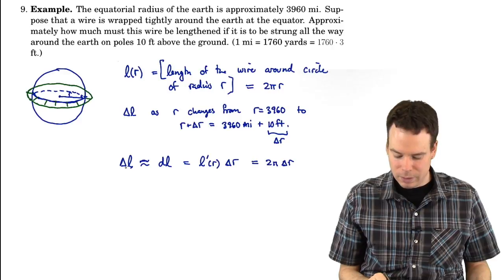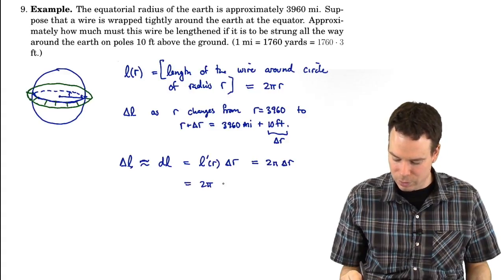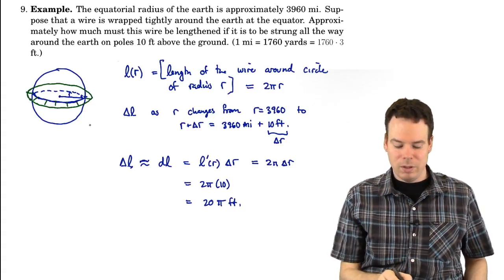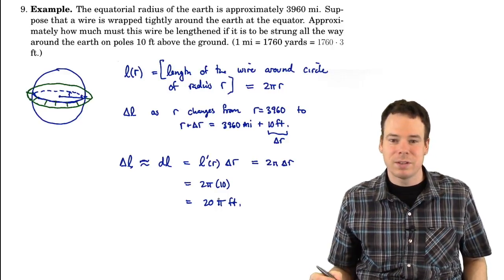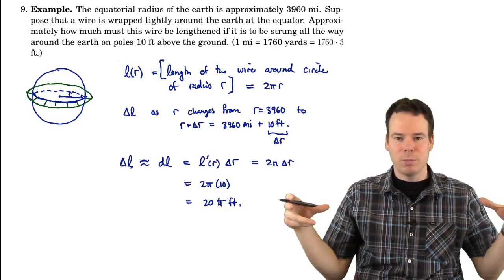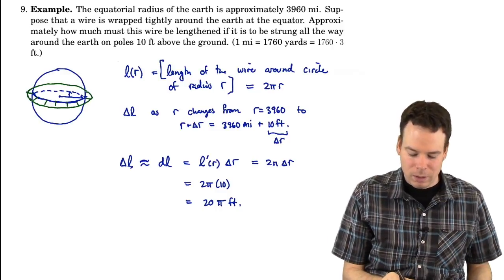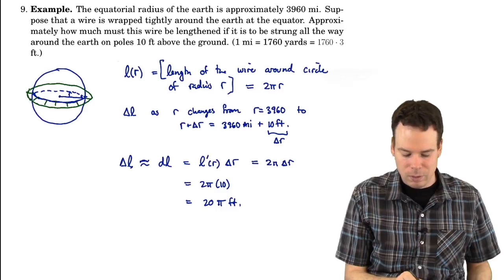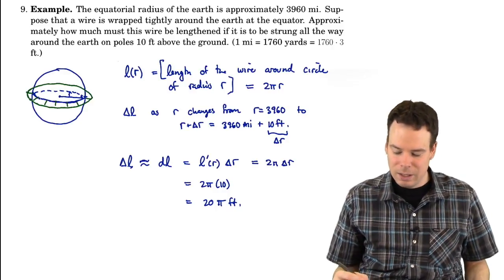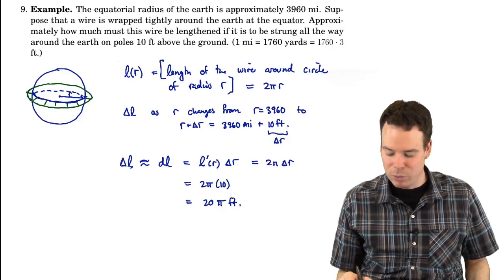So what is delta L approximately? The change in the length of wire is approximately 2 pi times delta R. Delta R was 10 feet, so this is approximately 20 pi feet — a little over 60 feet. We just need to lengthen the wire by about a little over 60 feet to get it on top of all these 10-foot poles all the way around the Earth. You could also do this exactly — work out the circumference of the raised circle, work out the circumference around the equator, and take their difference.